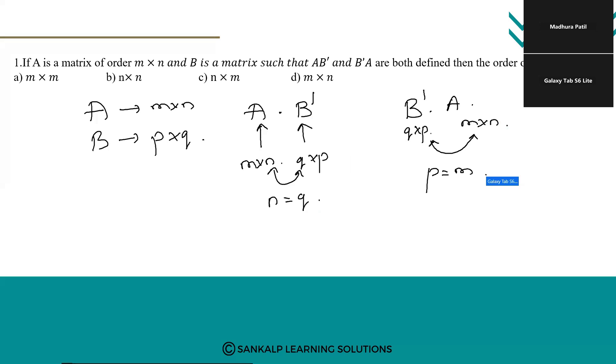So we get the value of P as n. So by this we have taken the order of B as P cross Q which will give us n cross n. So what is the order of B? n cross n, option D. Thank you.